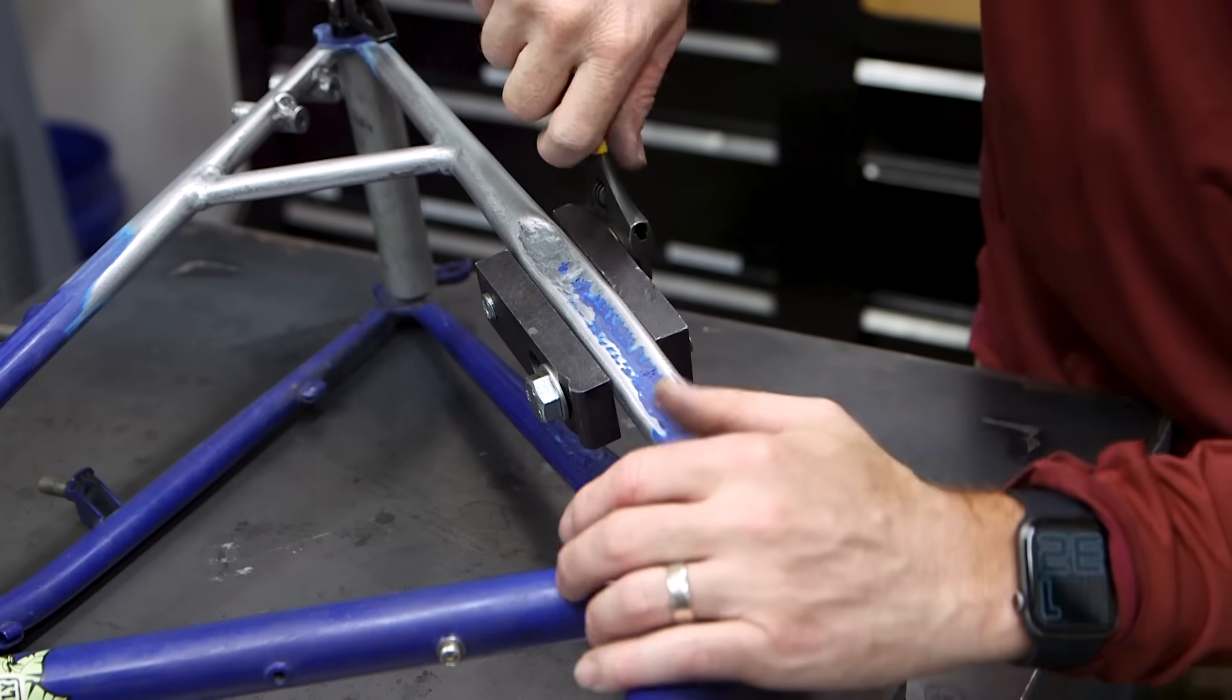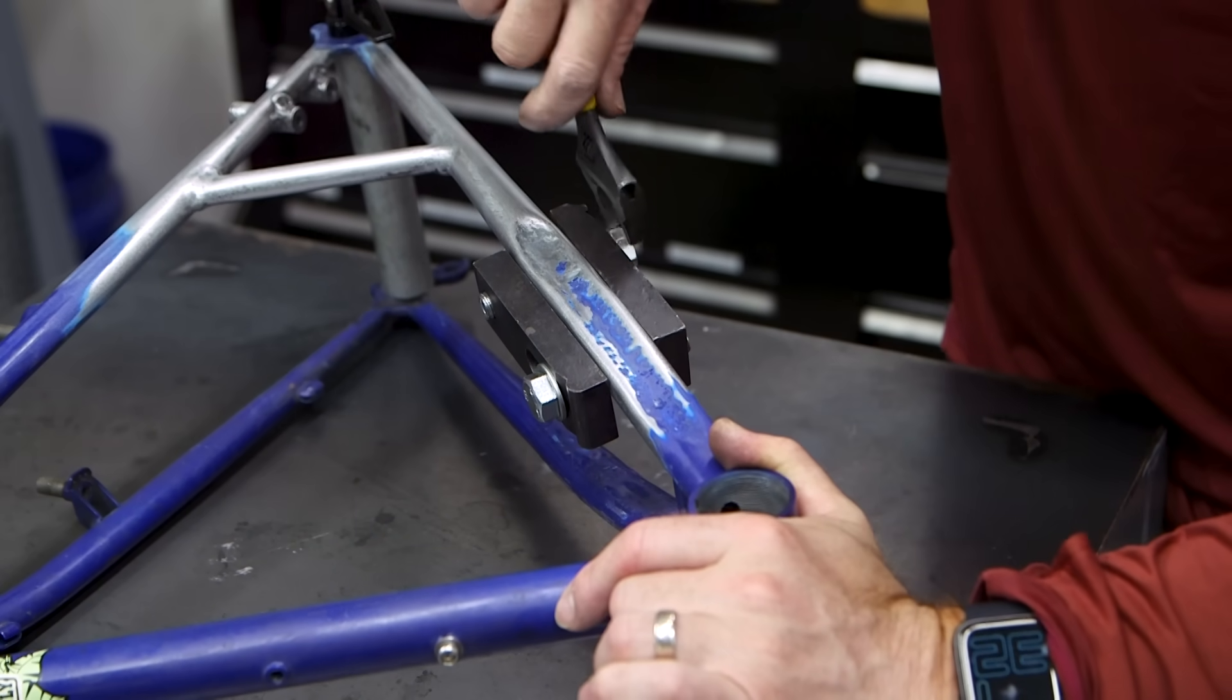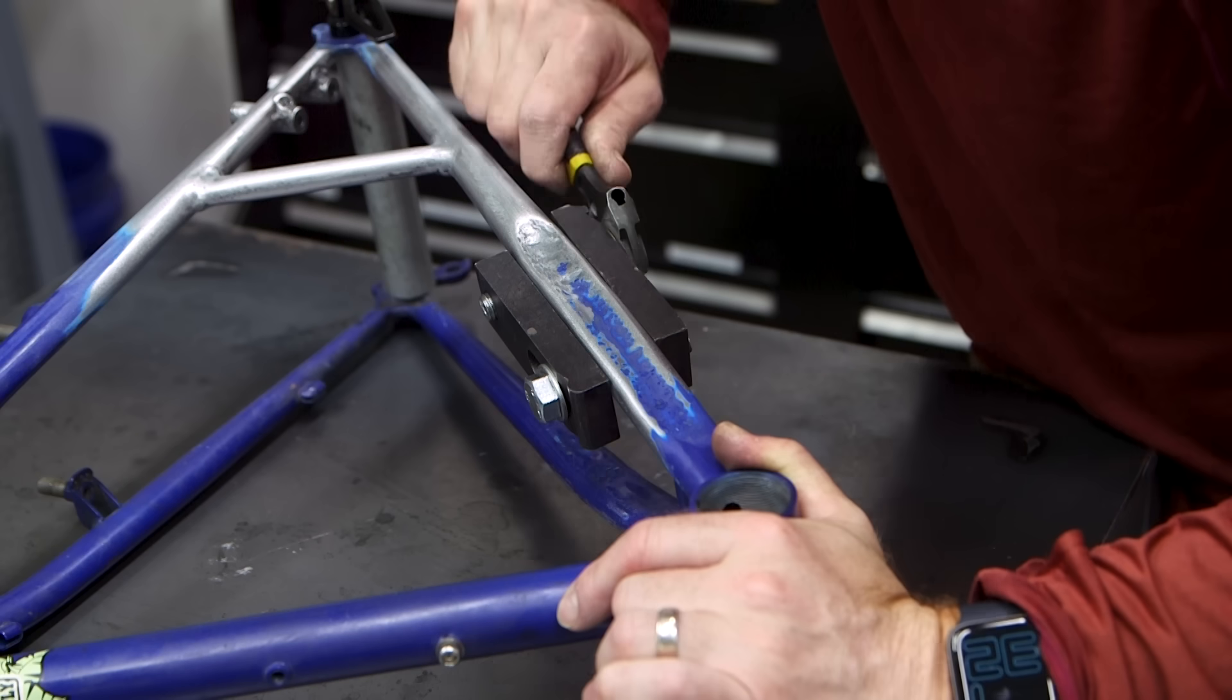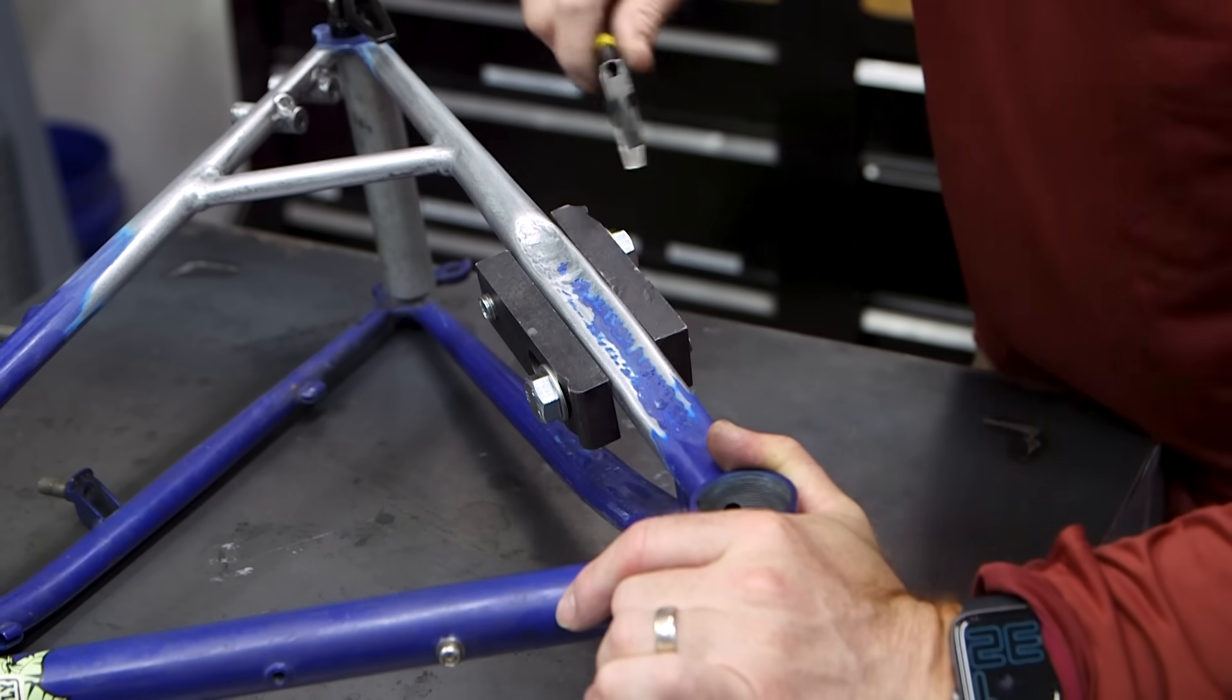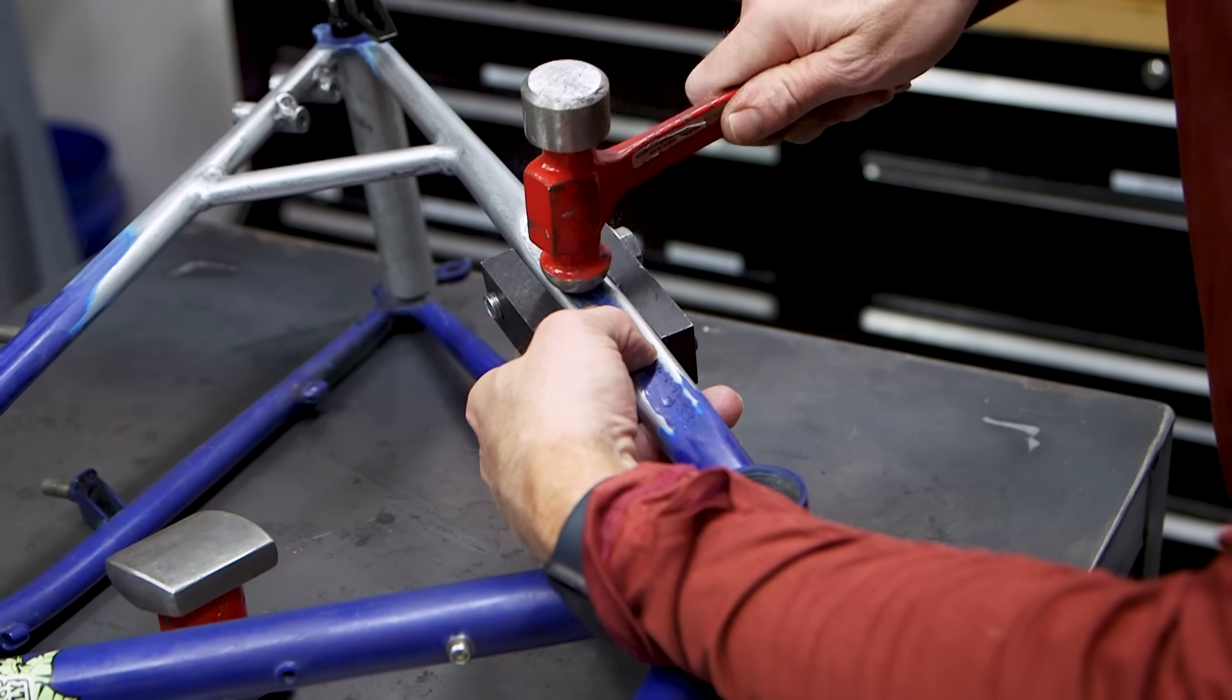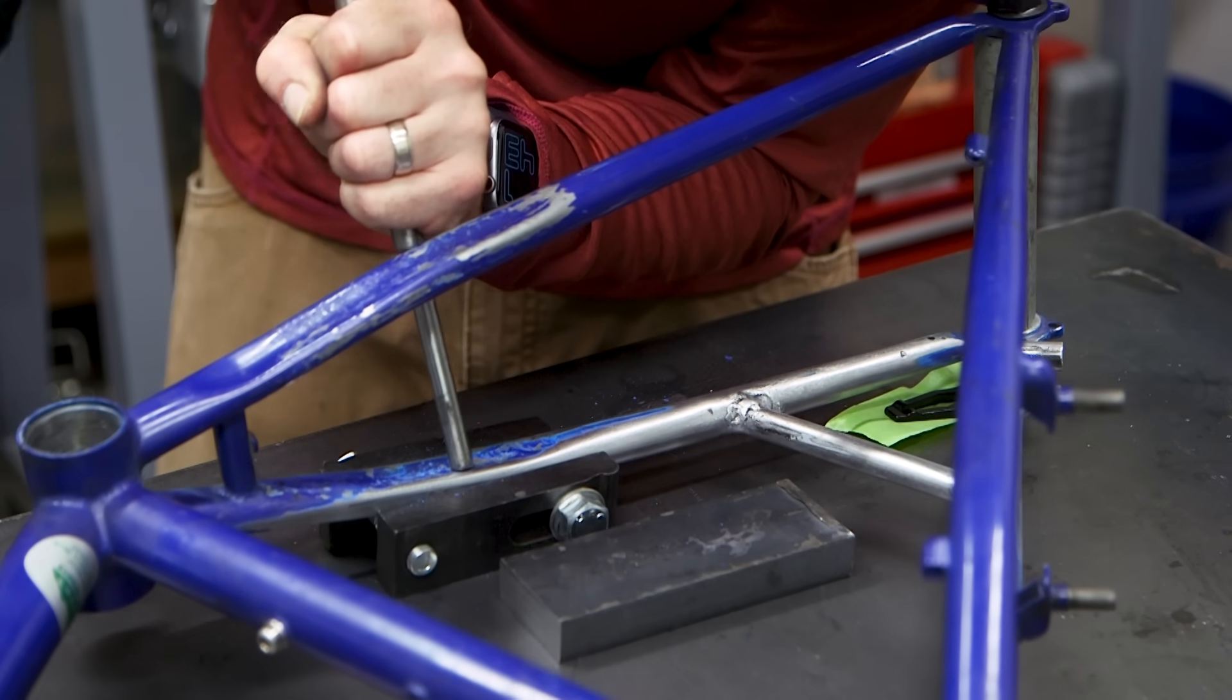I have my mind set on running a 1x GRX crankset on this frame. A big problem though is that when the crank arms are rotated around, they hit the chainstays. I decided to reshape the chainstays to add some clearance. I clamped the top and bottom of the stays to prevent them from distorting, and then I reshaped them. I added clearance with a peen and a punch.